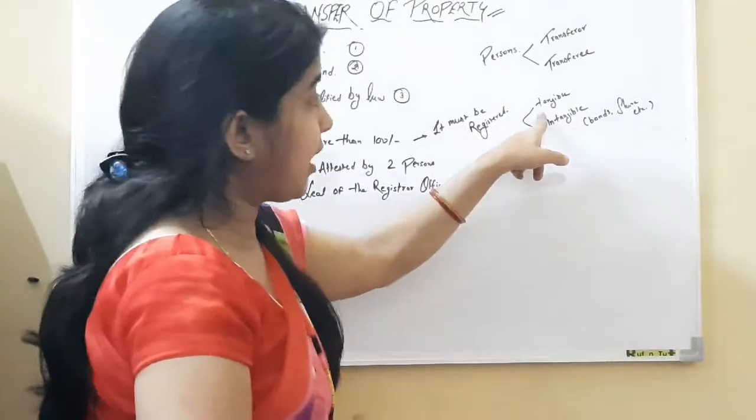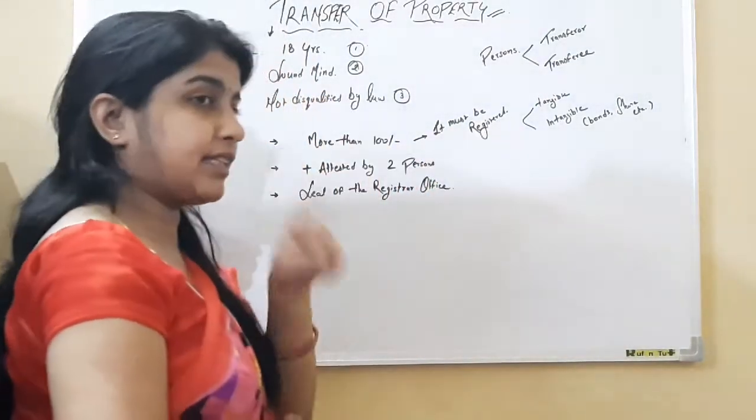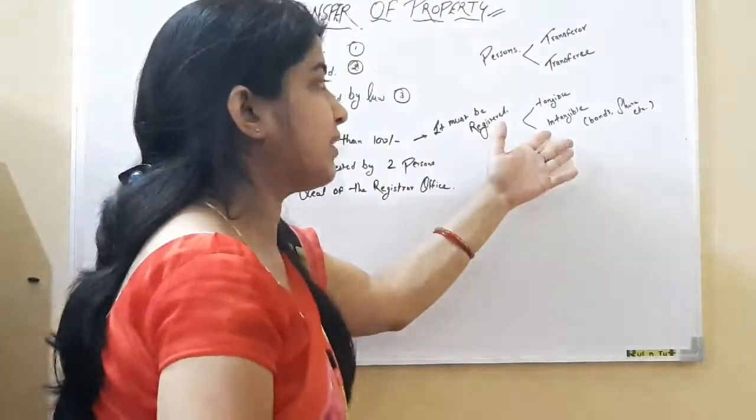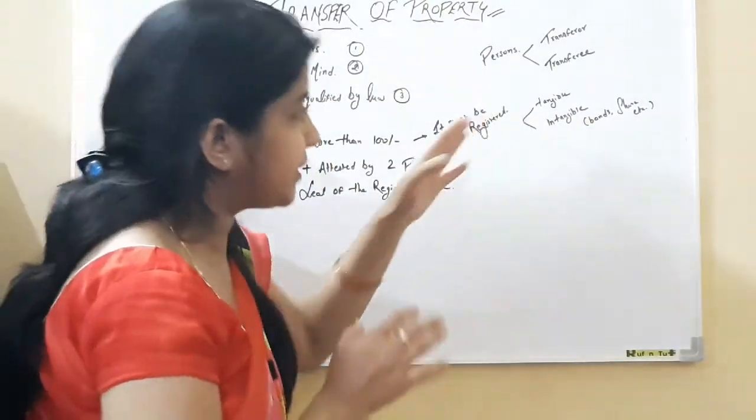So above 100 rupees amount, that property must be transferred by the registered instrument. But intangible, like bonds, shares, which cannot be touched, that property must be registered.